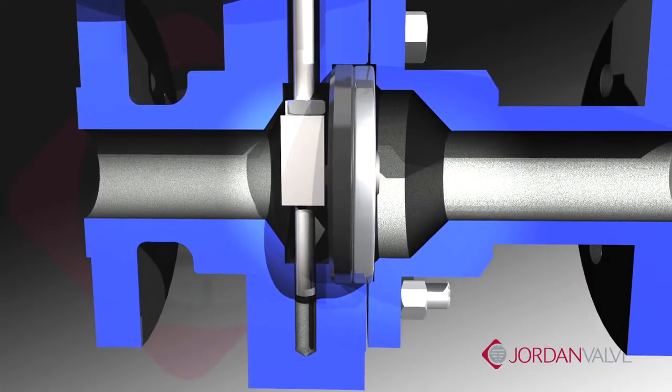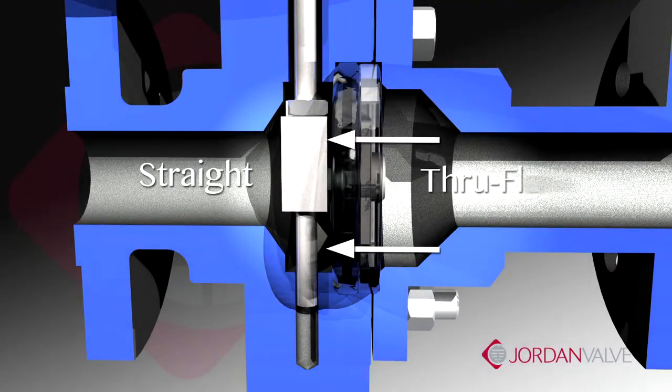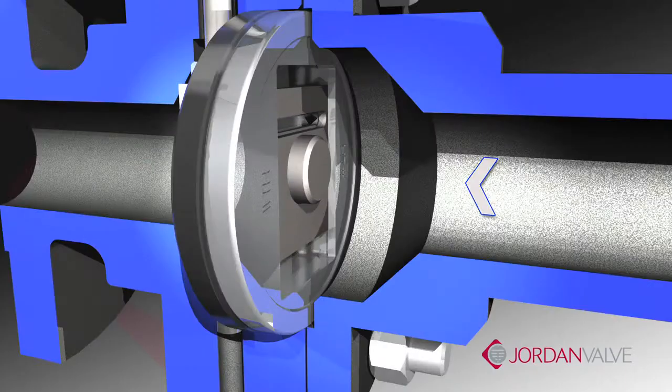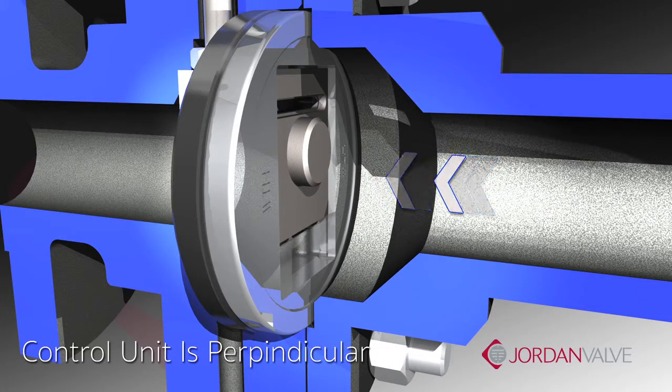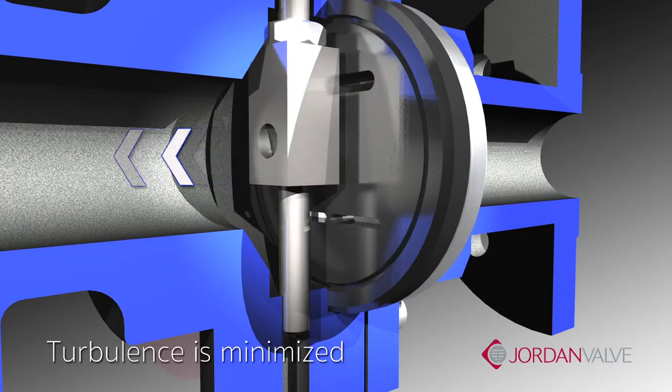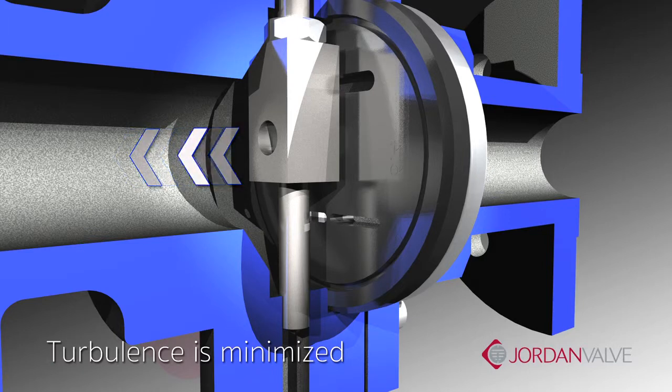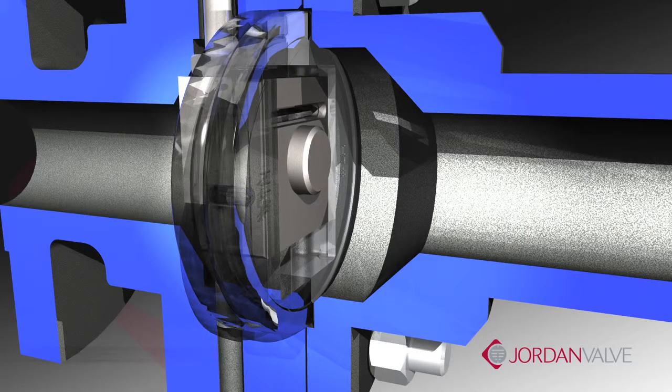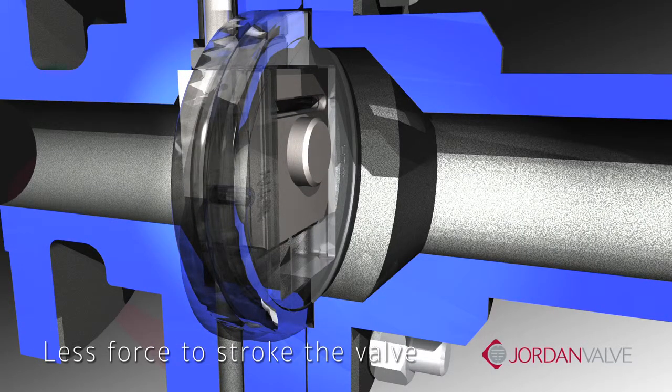In contrast, the sliding gate generates a straight flow through the slots. Because the control element is perpendicular to the flow, turbulence and noise are minimized, thus leading to superior trim life. It also means better sealing and less force required to stroke the valve.